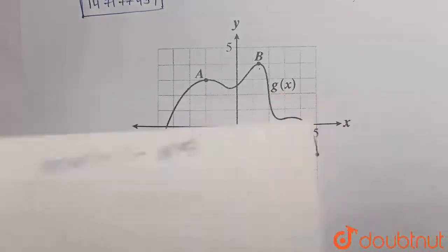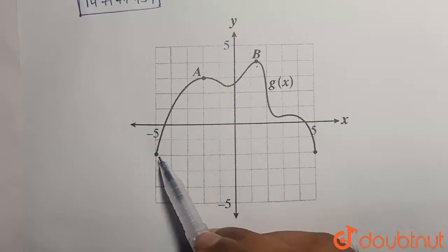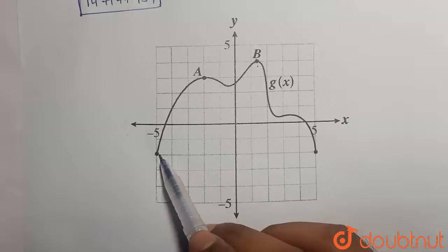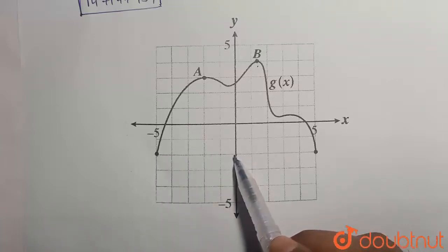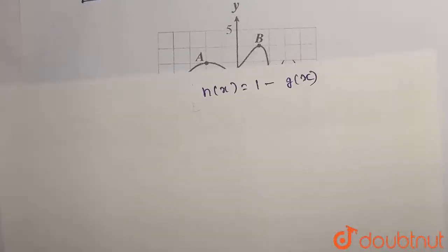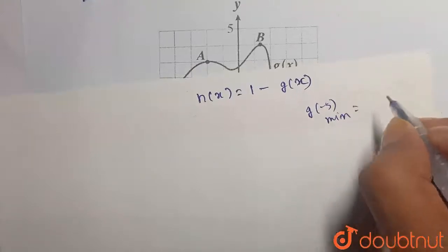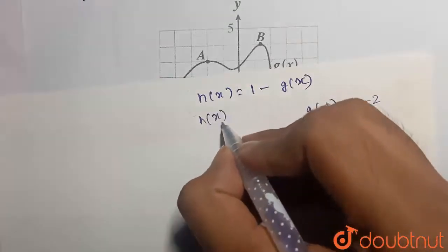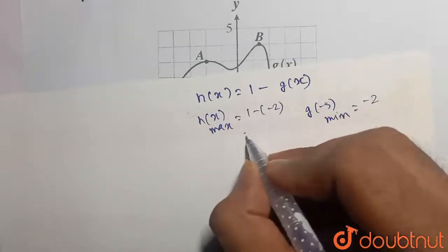What is the minimum value of g(x)? We need to get it from the curve. The minimum value of g(x), as you can see here — if this is minus 1, this will be minus 2. So this point here, the x-coordinate is minus 5. So at g(minus 5), the value of g(x) is minus 2. So minus 2 is the minimum value of g(x). The maximum value of h(x) will be: h(x) max equals 1 minus (minus 2), which is equal to 3.